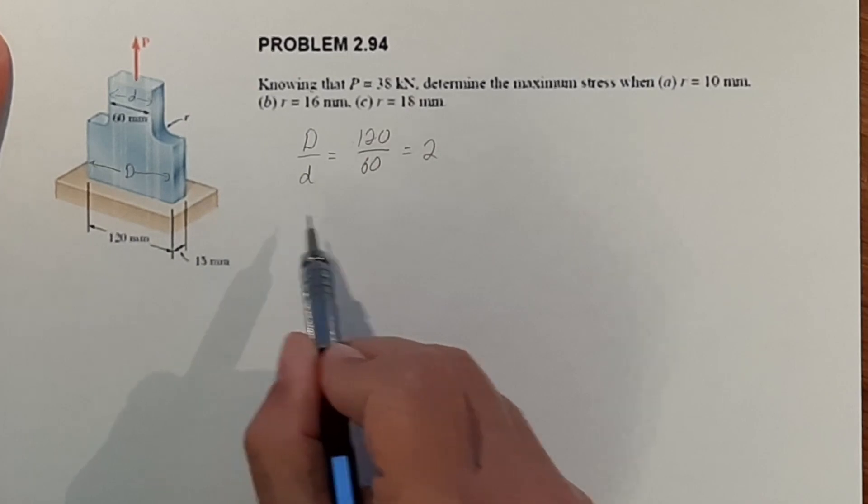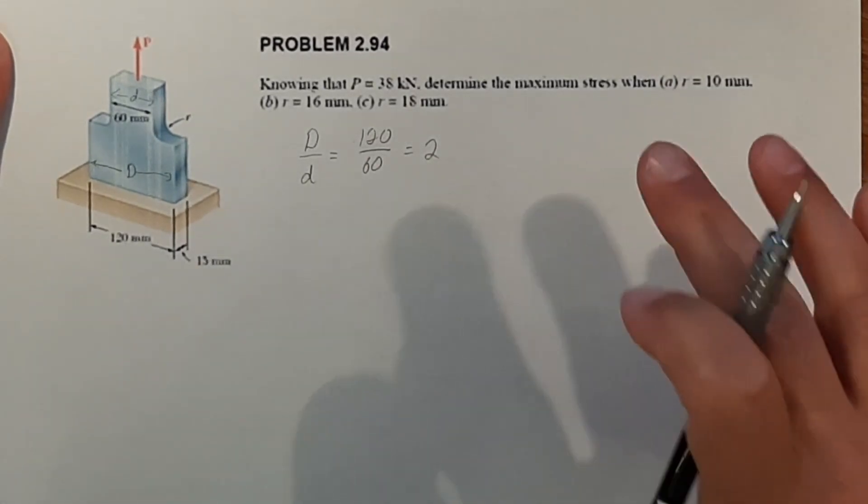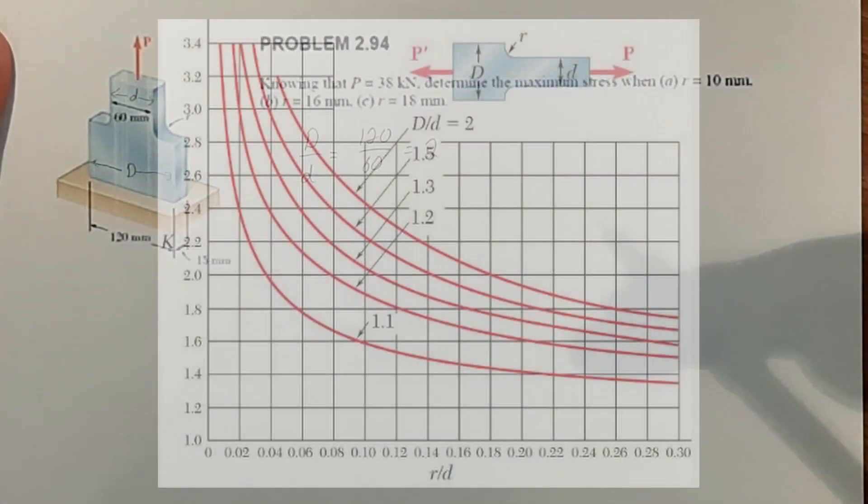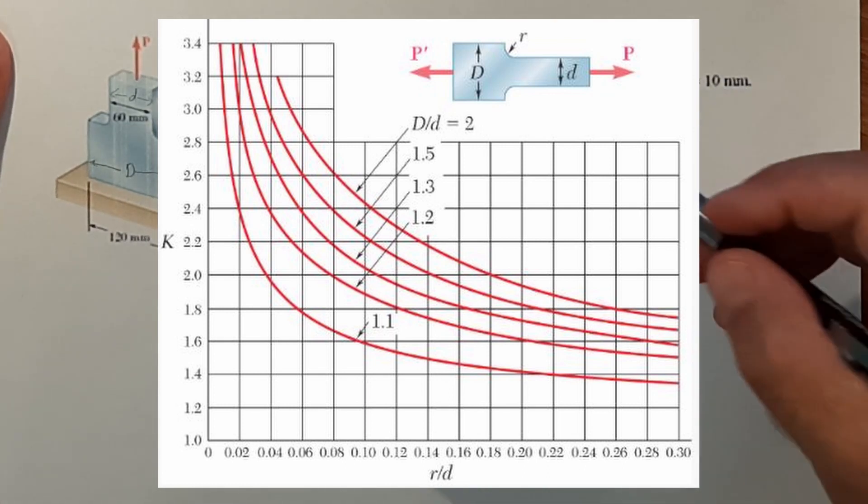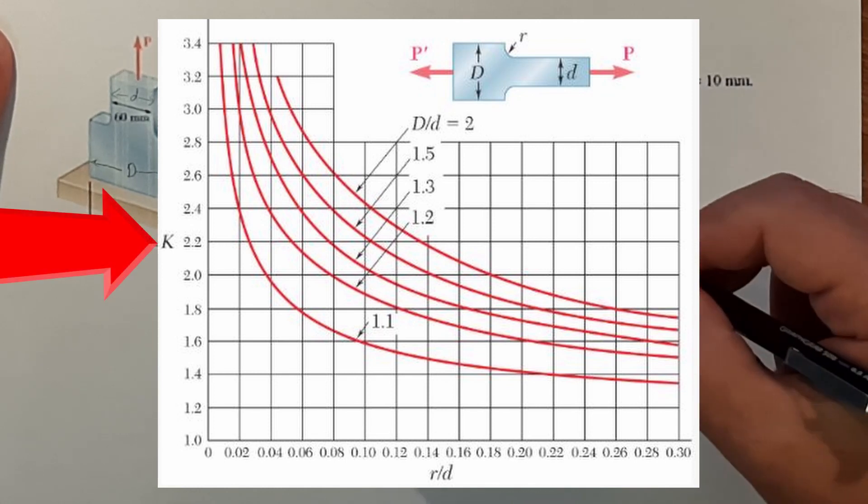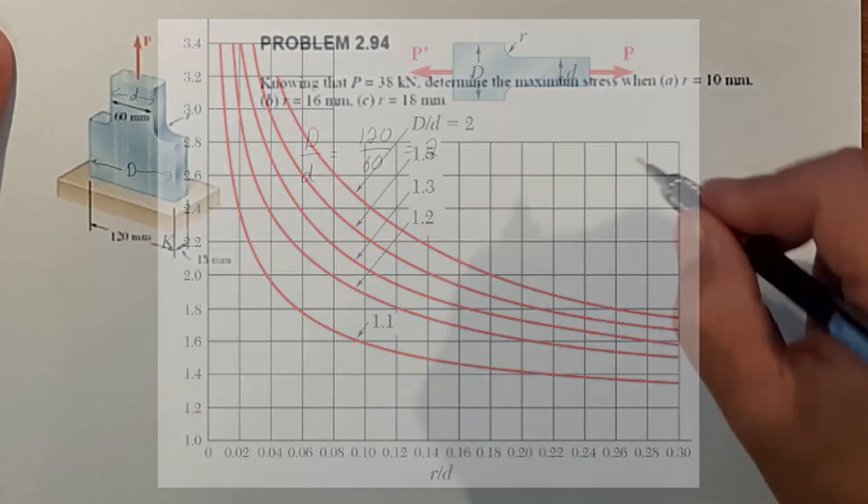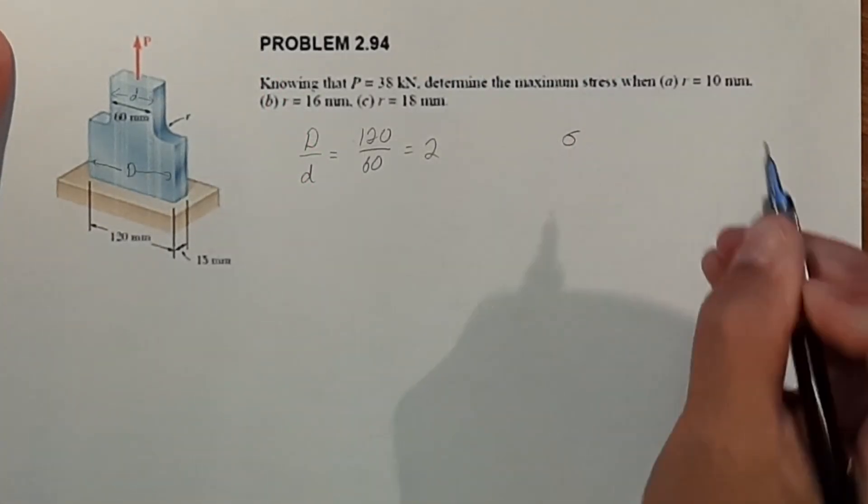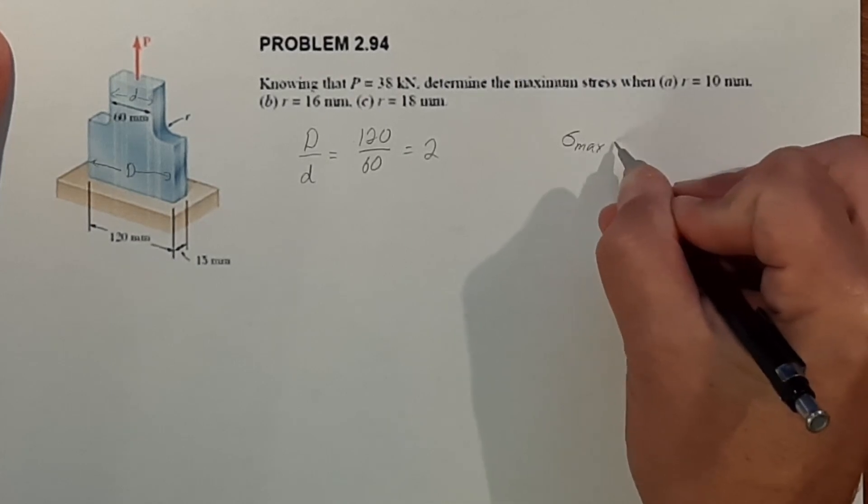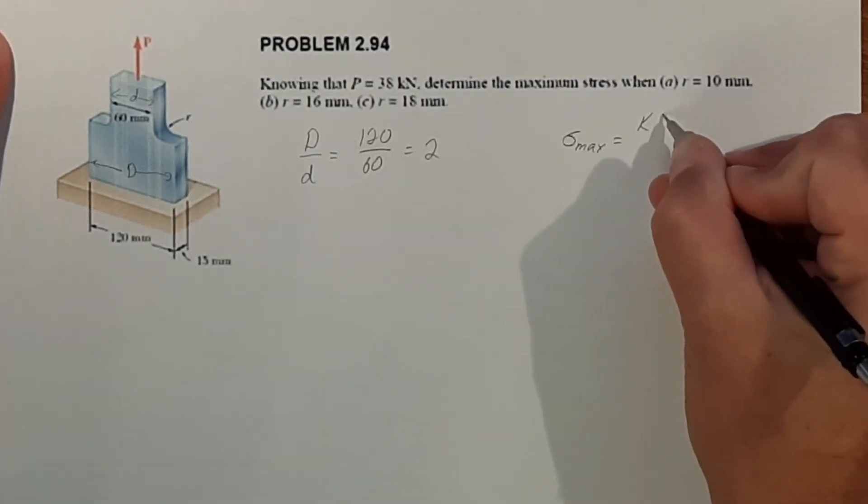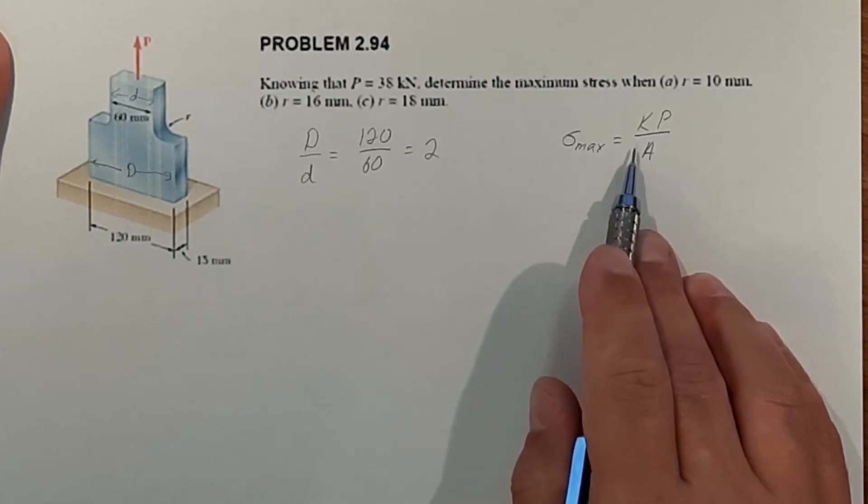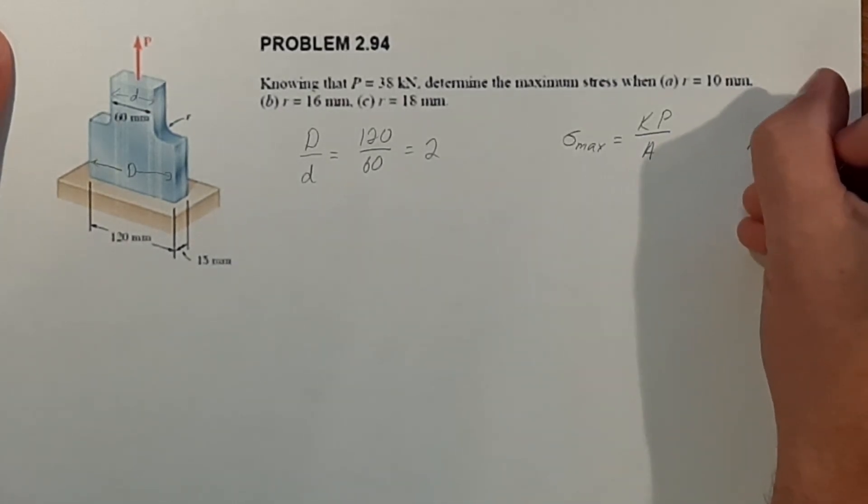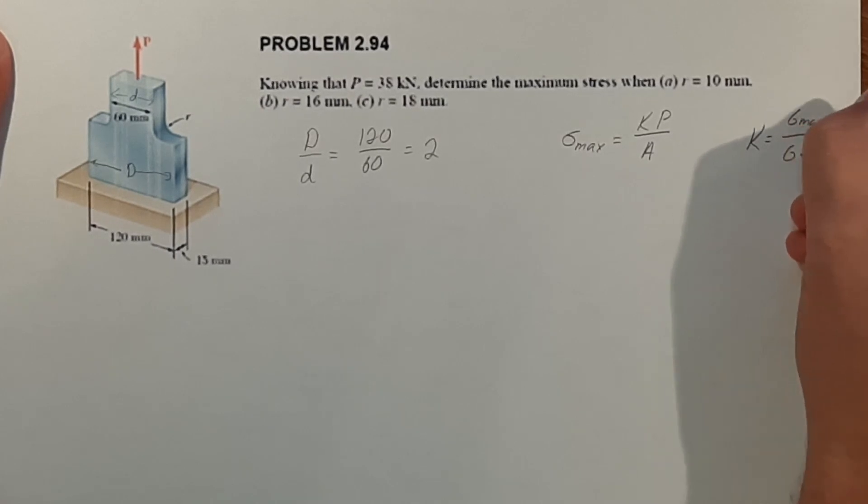Now the reason we need this is because we're going to have to find a constant K. Some people already made graphs and did all the calculations to where all you have to do is find your information on a chart to find your value K to input into your equation. And that equation is stress max is equal to K times P over A. So this is a stress concentration factor and K is also equal to max stress divided by average stress.